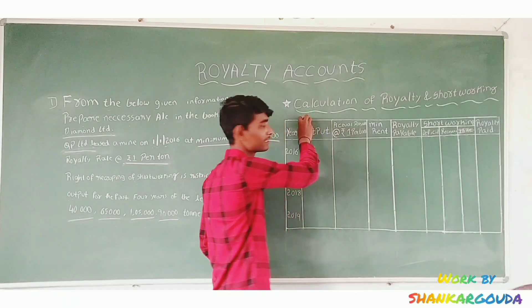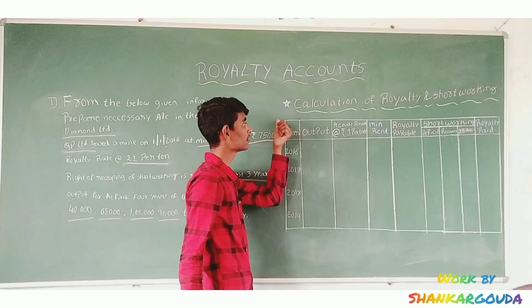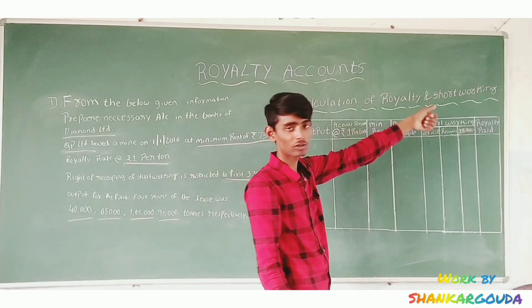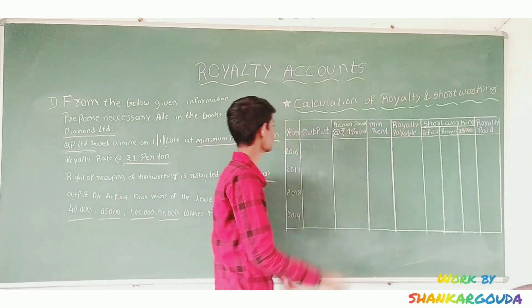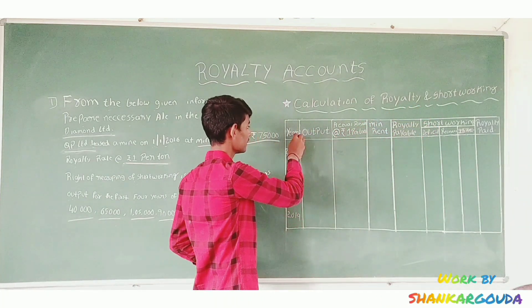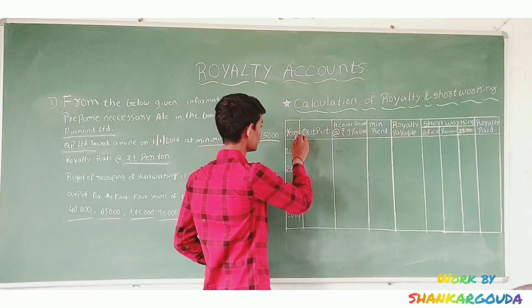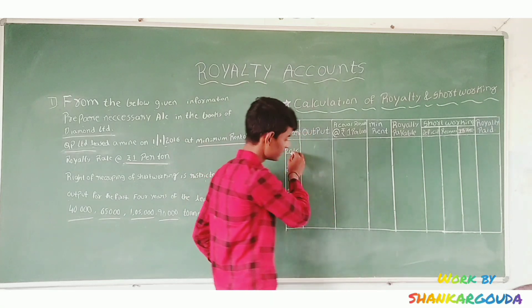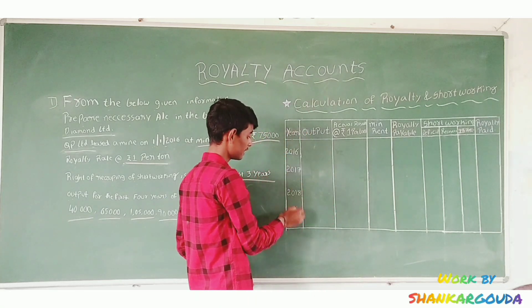Next, we have to calculate the royalty and short working. Here we have the years: 2016, 2017, 2018 and 2019.